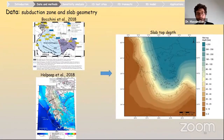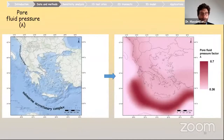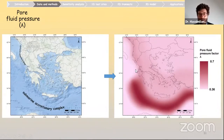For the geometry of the subduction zone and the slab, we considered recent models from Bocchini et al. and Apat et al., merging them to obtain a slab top surface used for modeling the subduction zone geometry. For pore pressure, we generally assigned a hydrostatic value to the bulk of the study area, but for specific regions such as the submarine accretionary complex — the Mediterranean Ridge — or the continental accretionary wedge close to the Hellenides, we selected slightly higher values indicating suprahydrostatic conditions.